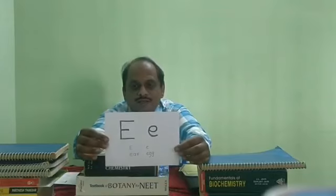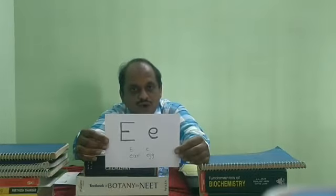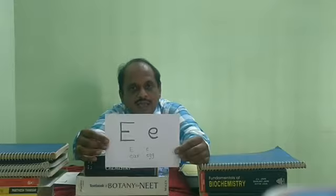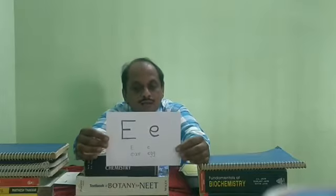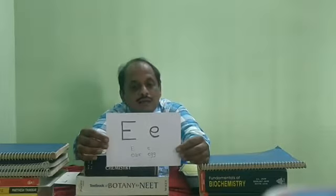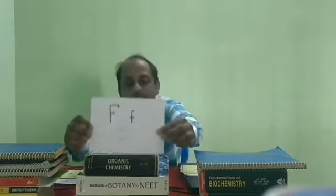Here I am with capital, or big, letter E and small E. The sound is E. Examples: ear and egg. Again, I am going to repeat the sound: E — ear and egg.